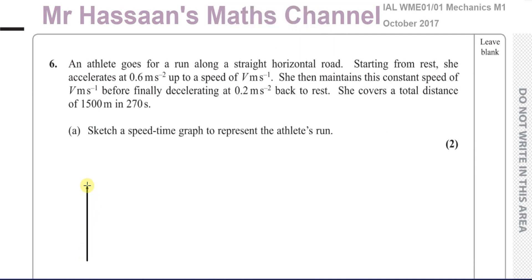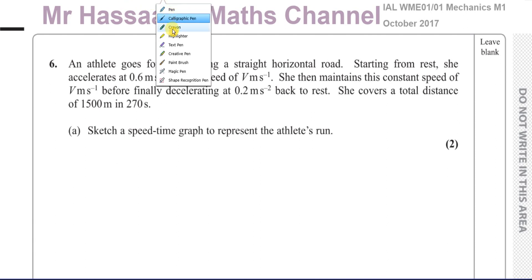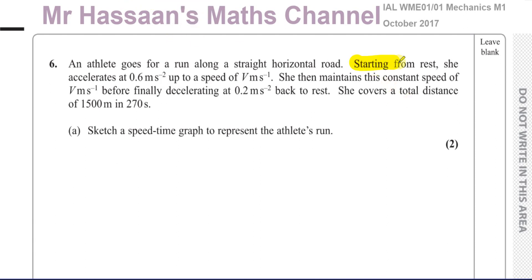The question says: an athlete goes for a run along a straight horizontal road, starting from rest. She accelerates at 0.6 meters per second squared up to a speed of V meters per second. She then maintains this constant speed of V meters per second before finally decelerating at 0.2 meters per second squared back to rest. She covers a total distance of 1500 meters in 270 seconds.